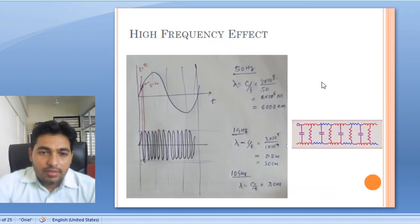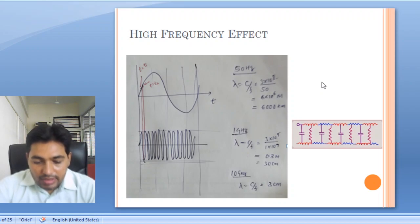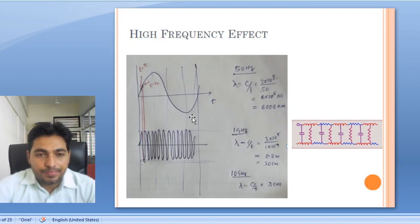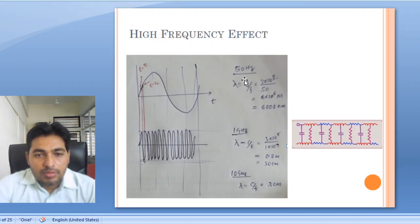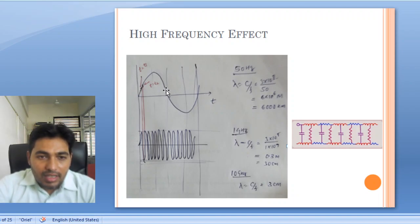Next, what will happen if frequency increases? Let us take a circuit working at a low frequency and consider a sine wave at 50 Hz. The corresponding wavelength λ = c/f = 3×10⁸ / 50 = 6,000 km. So the wavelength corresponding to 50 Hz is 6,000 km. Now if we have a circuit board roughly 10 to 15 cm, at that low frequency this is just one wavelength.